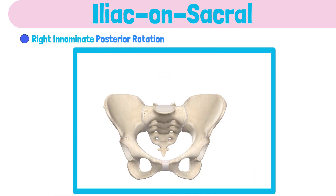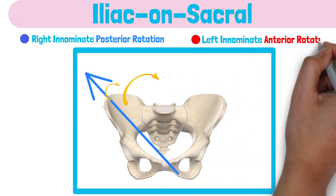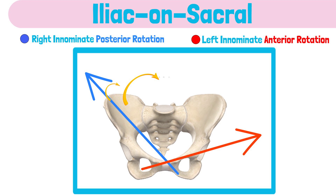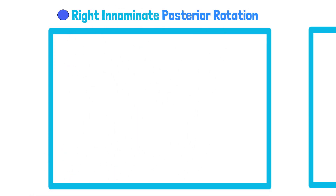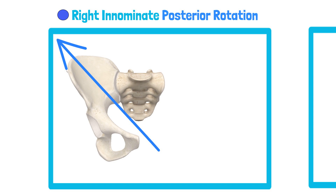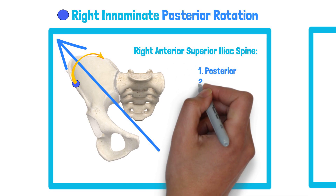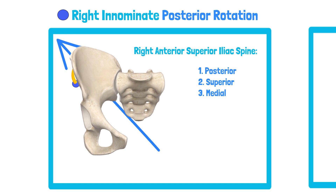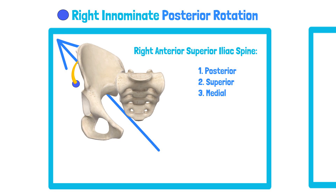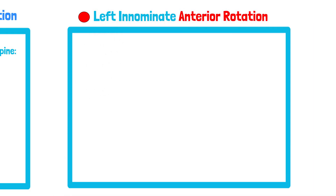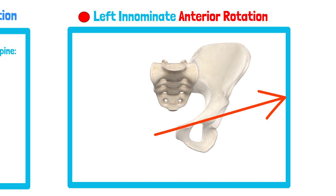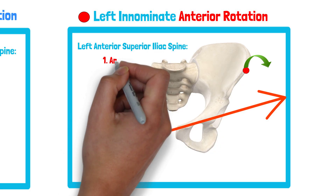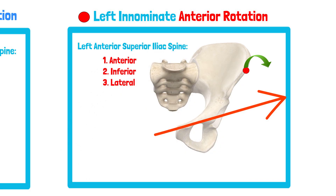For example, let's take the posterior rotation of the right innominate and the anterior rotation of the left innominate. The axis of rotation of the right innominate pierces right through the pubic symphysis. Follow the right anterior superior iliac spine as it moves posterior, superior, and medial. Now let's examine the left innominate rotating anterior — once again, the axis is through the pubic symphysis. Follow the left anterior superior iliac spine as it moves anterior, inferior, and lateral.